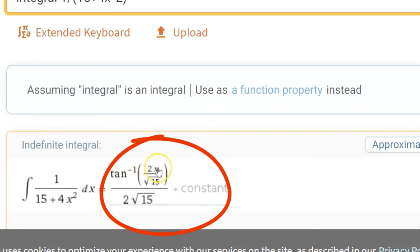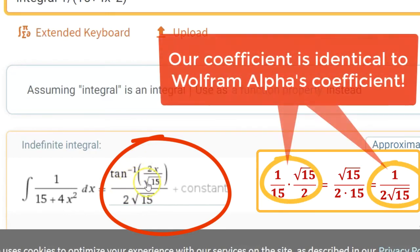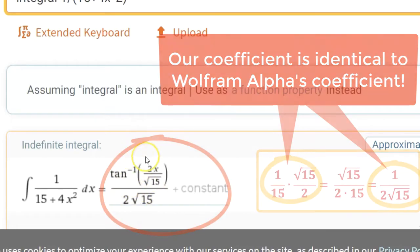The inverse tangent, there it is. Now, Wolfram Alpha left the radical square root of 15 in the denominator. Our result has the square root of 15 in the numerator. So we would have to do some rationalization to see that this is indeed equivalent. But it is. This is equivalent to what we got on the whiteboard.